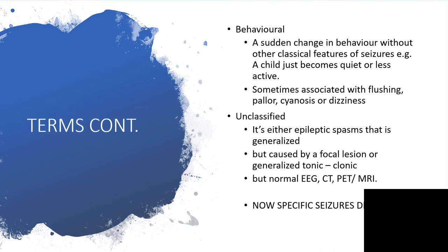Seizures could be unclassified and it will become unclassified if it is either epileptic spasm that is generalized. So it's not generalized tonic clonic. It's just spasm. But it's caused by a focal lesion or generalized tonic clonic. However, when you have your EEG, CT, PET, MRI done, all will come back normal. So in that case, you've done everything, the features are like someone having tonic clonic seizures, but all the diagnostic investigations are pointing to nothing.